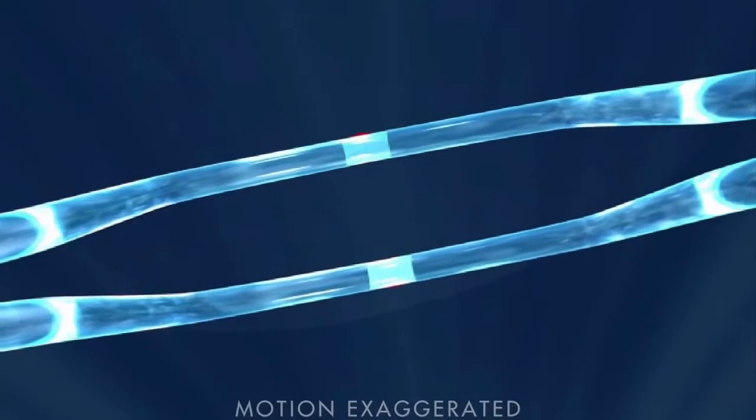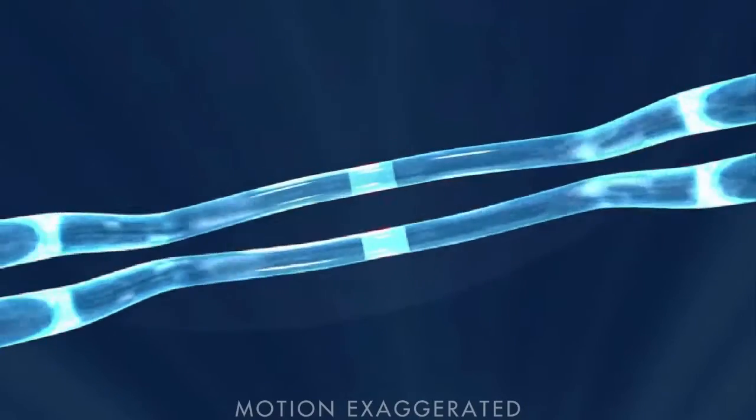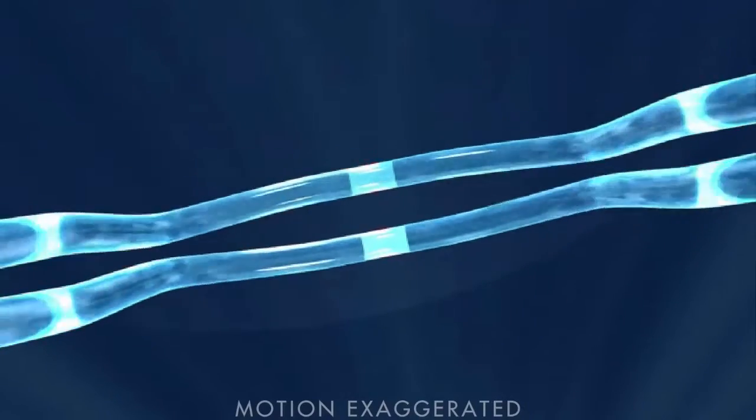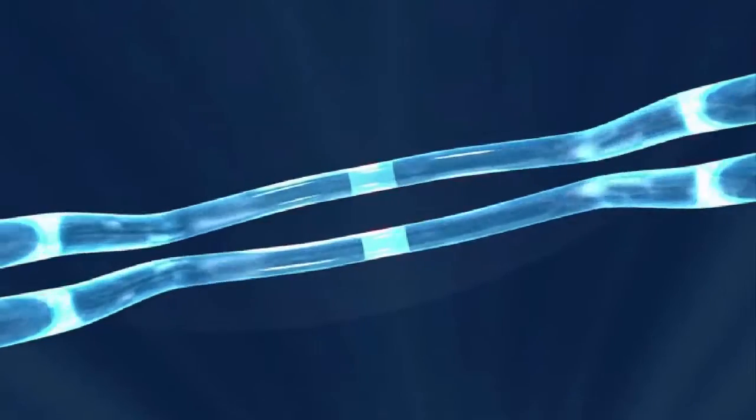When no mass is flowing, the two tubes oscillate symmetrically. But when a mass flows through the tubes, the tubes deform proportionally to the mass flow rate.